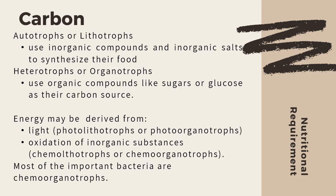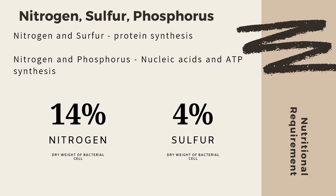Most of the important bacteria are actually chemoorganotrophs. Nitrogen, sulfur, and phosphorus are very essential for a bacteria to grow. These are essential elements needed for the synthesis of proteins and nucleic acids. For example, protein synthesis is not possible if nitrogen and sulfur is absent. Meanwhile, nitrogen and phosphorus is needed for nucleic acid and adenosine triphosphate synthesis. When you measure the dry weight of a bacterial cell, you'll see that 14% is made up of nitrogen, while 4% is actually composed of sulfur.